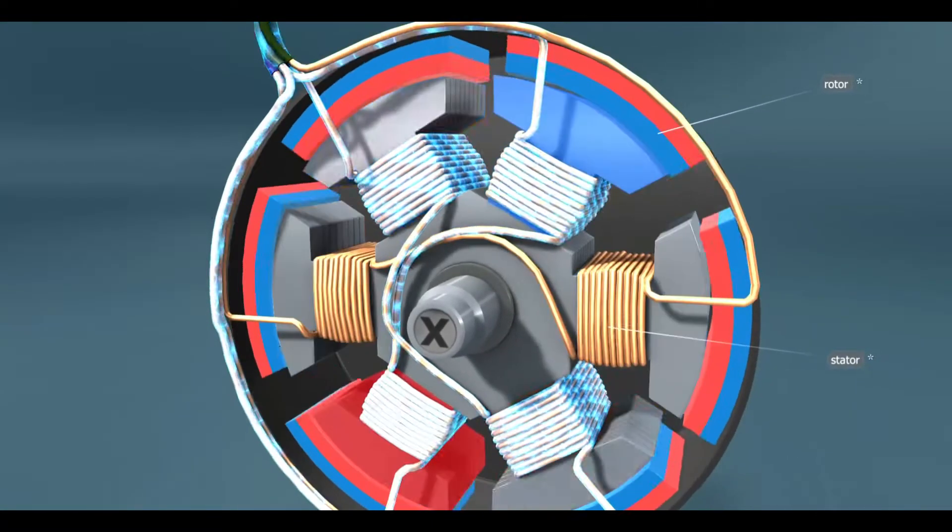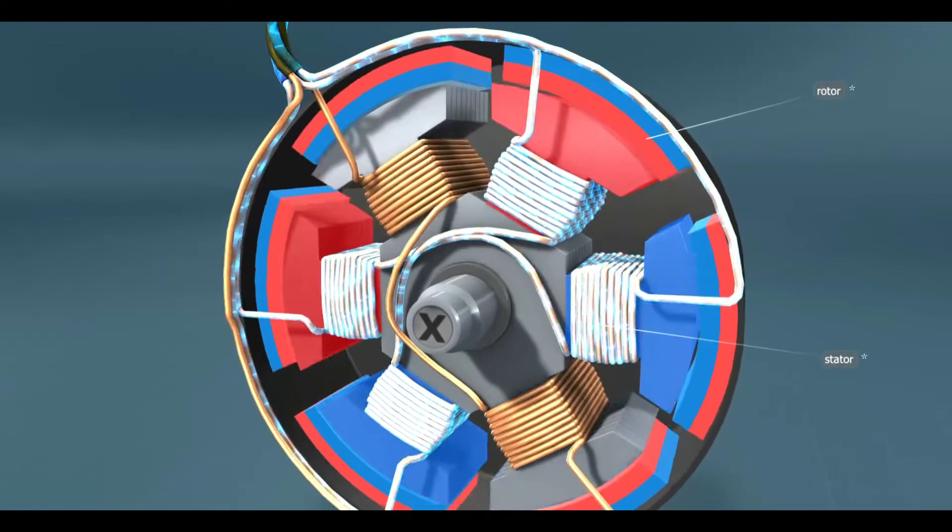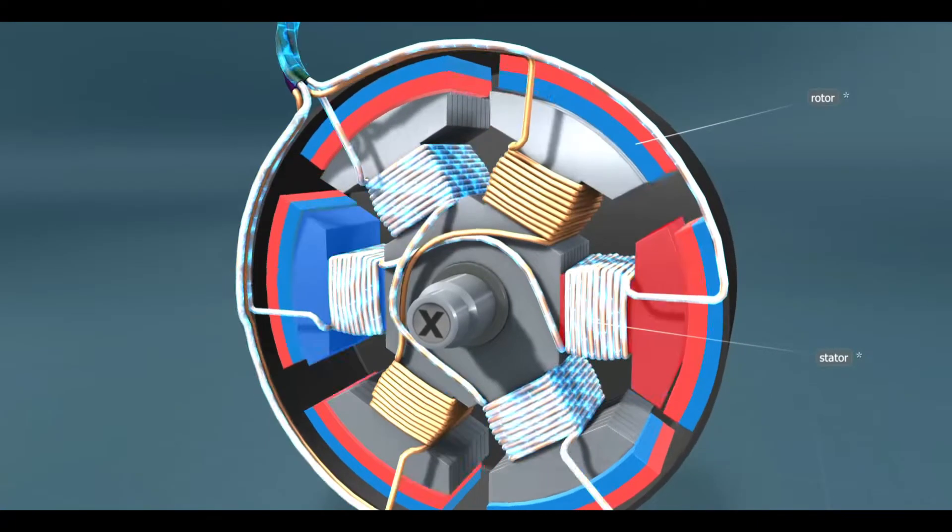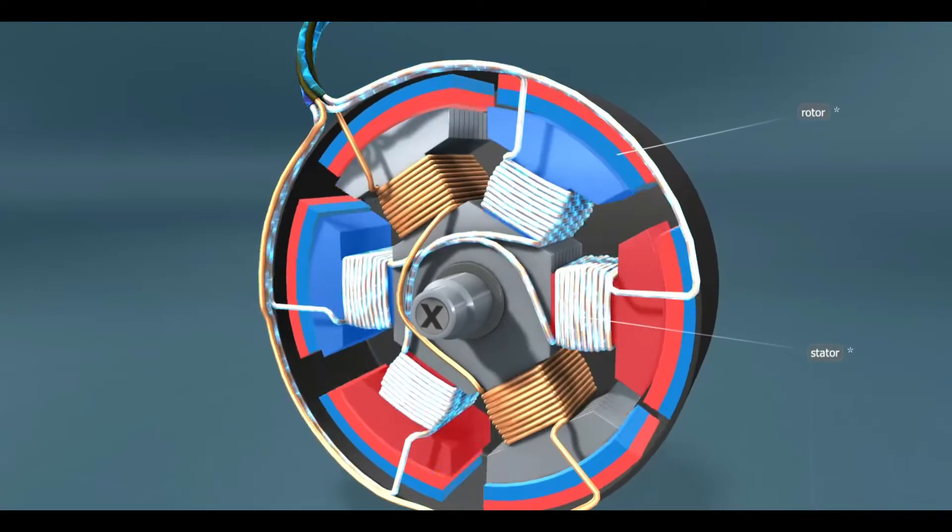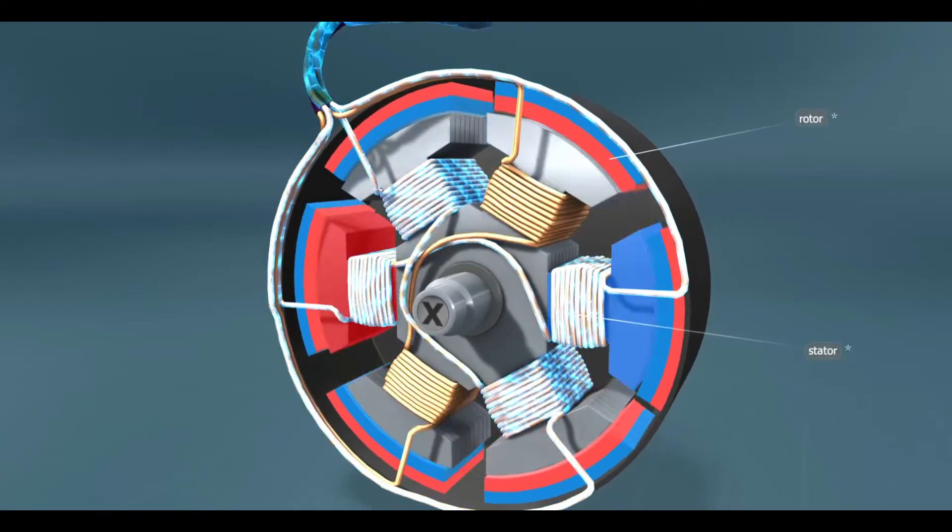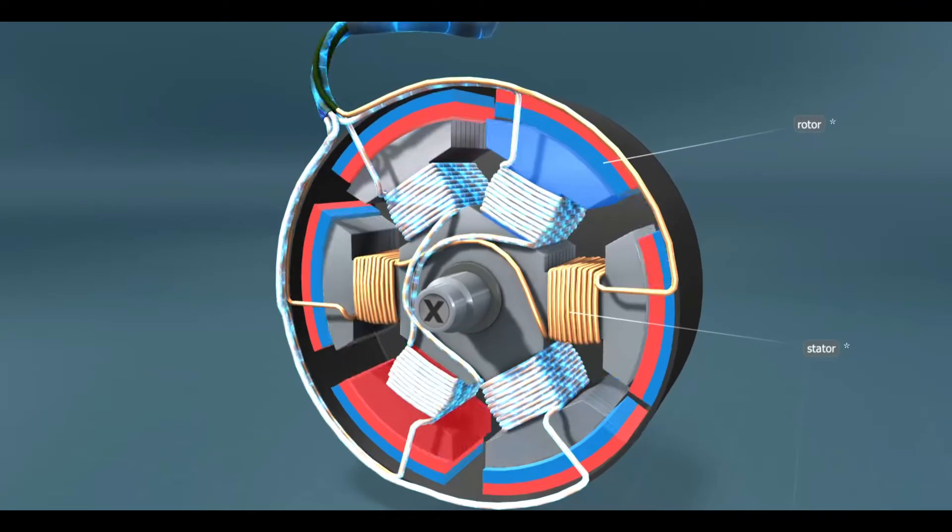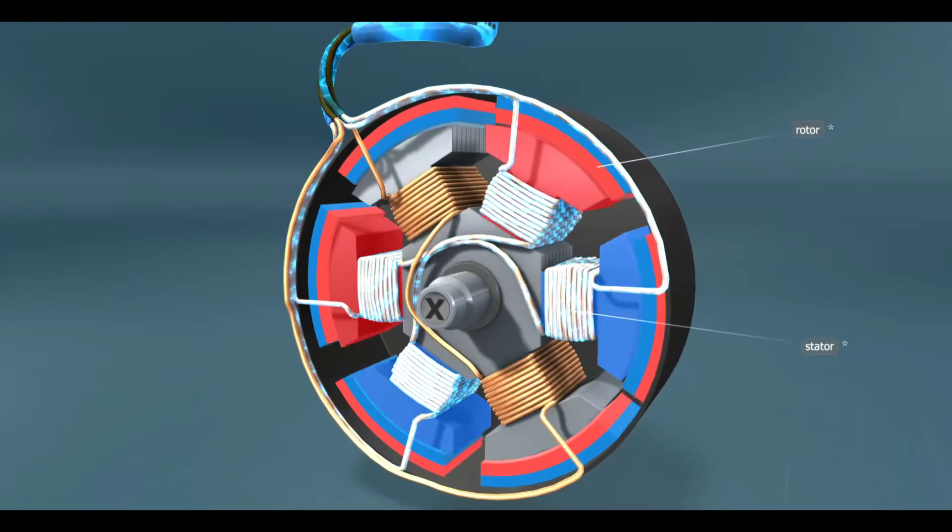Since alternating current is generated from direct current by an electronic circuit in modern electric vehicles, these motors can be considered as DC motors. They are also called brushless DC motors or BLDC motors.